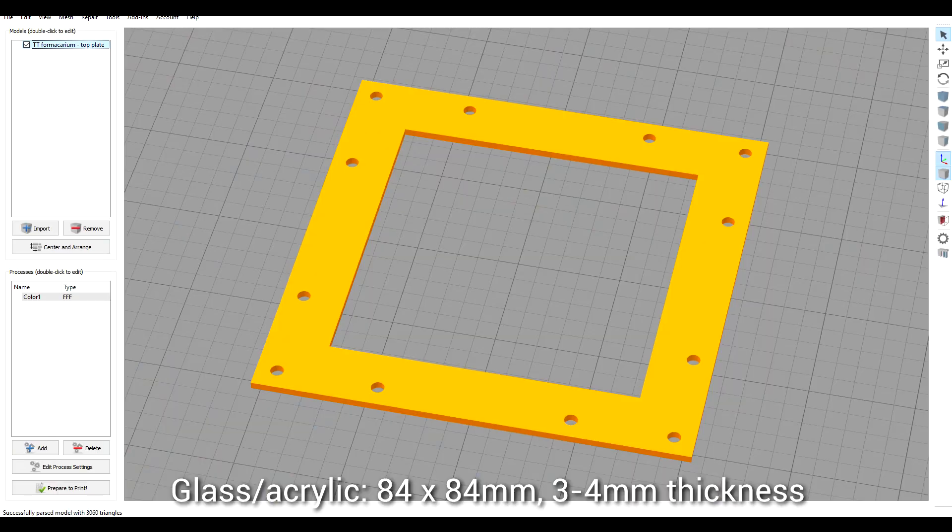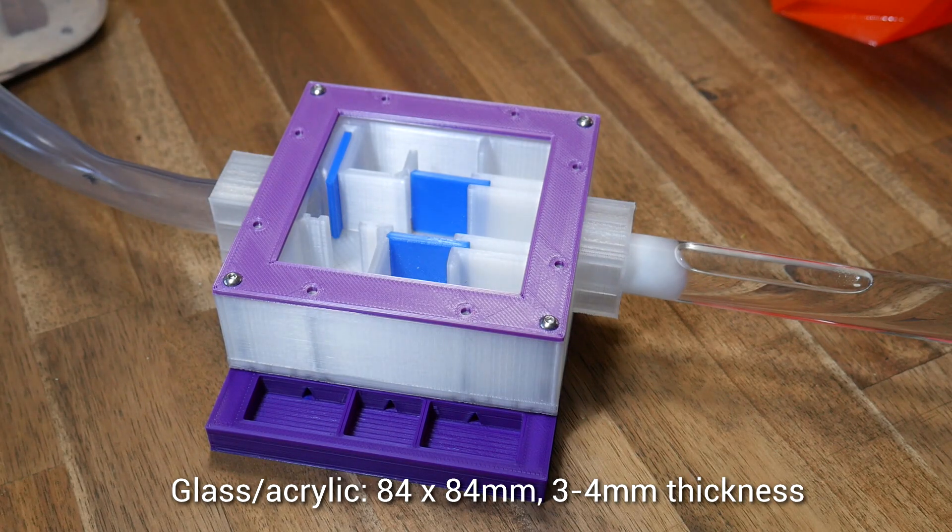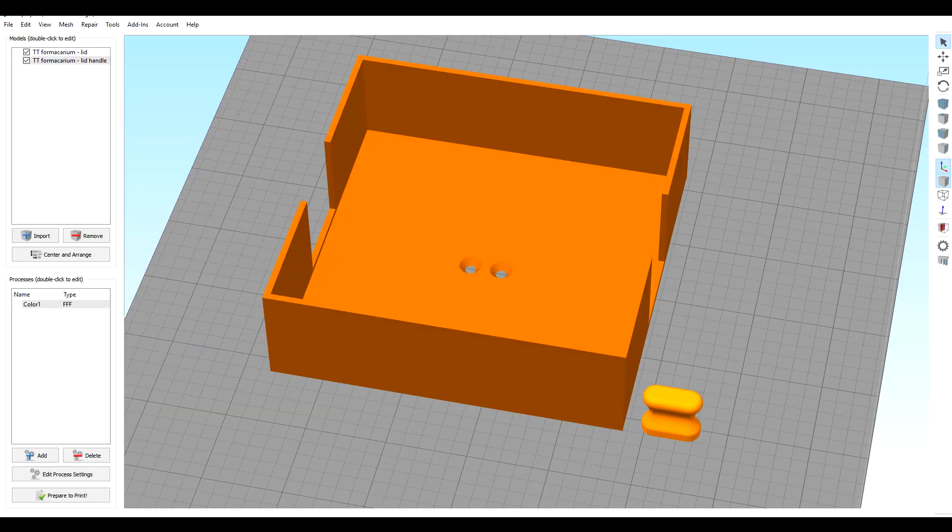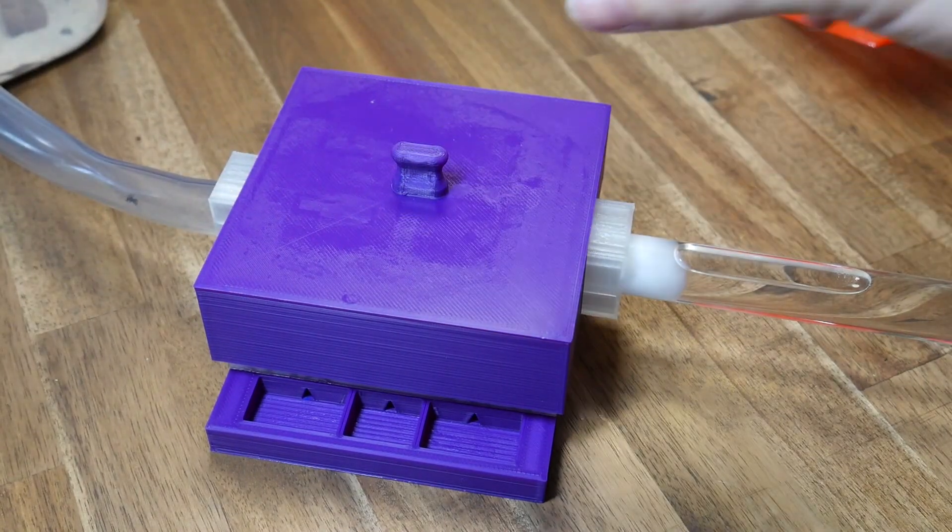The top plate isn't particularly special but the glass or acrylic for underneath it should be cut to 84 times 84 with the thickness between three to four millimeters. Finally we have the lid and lid handle. They bolt together and they don't require anything special to print. Hopefully yours is a nice fit to keep the ants in the dark like they prefer.